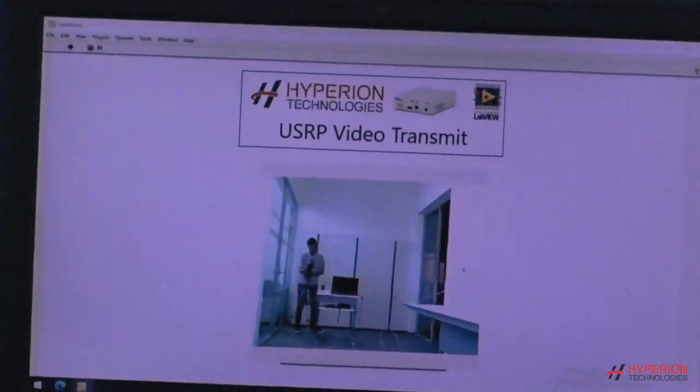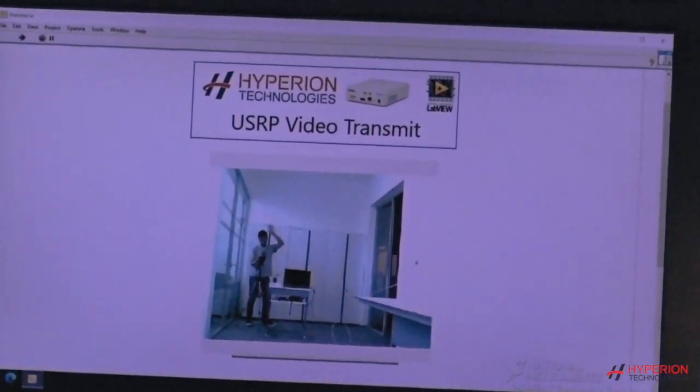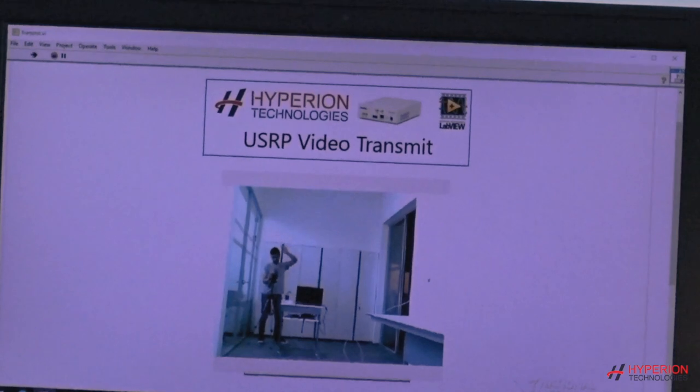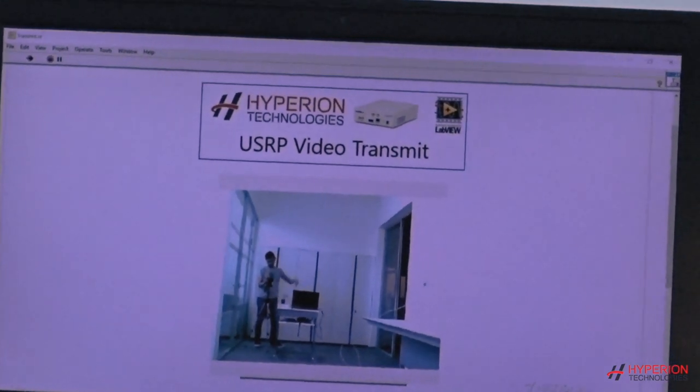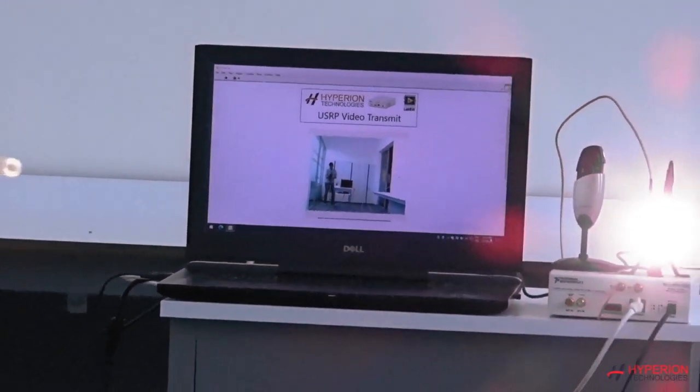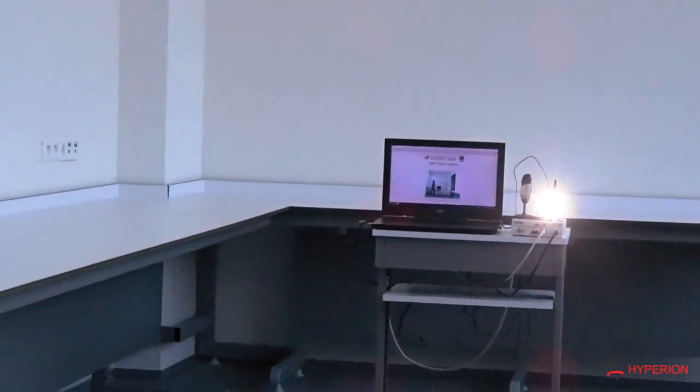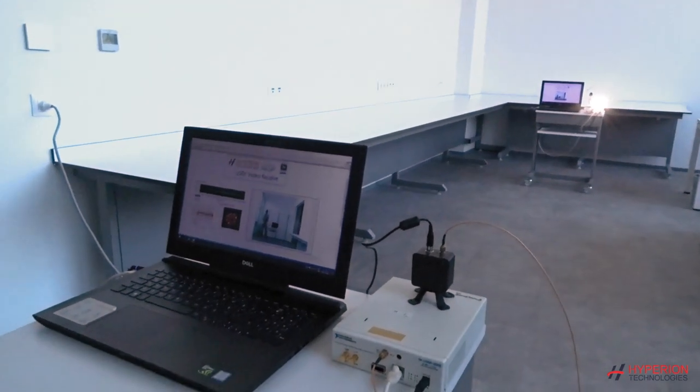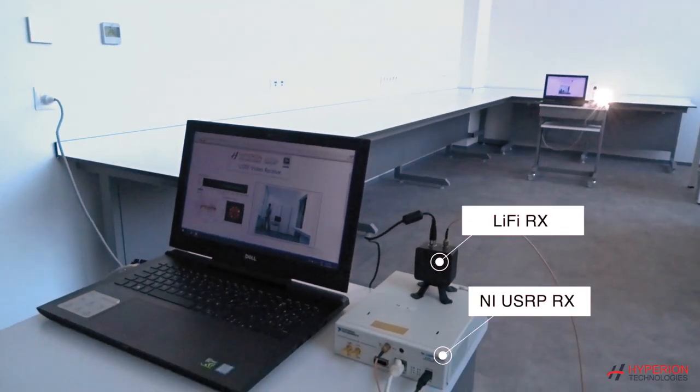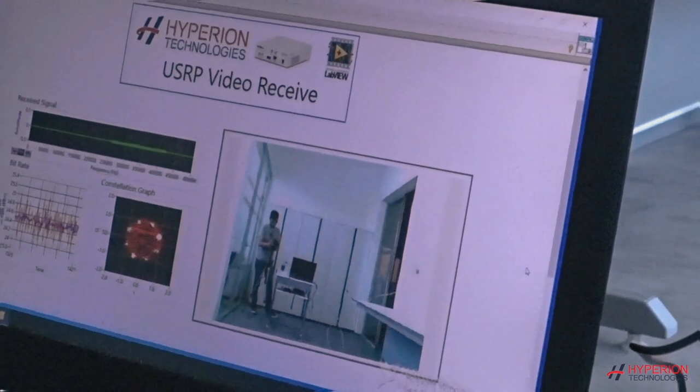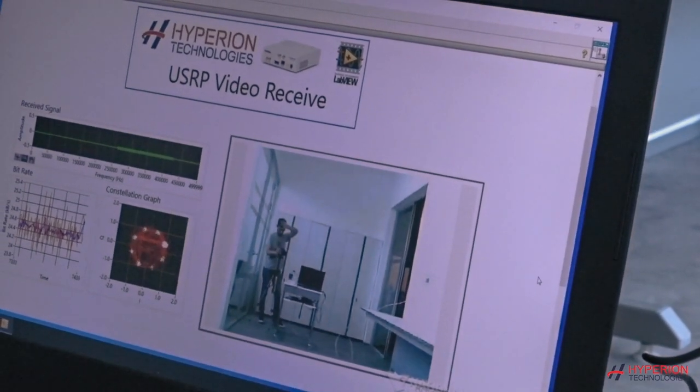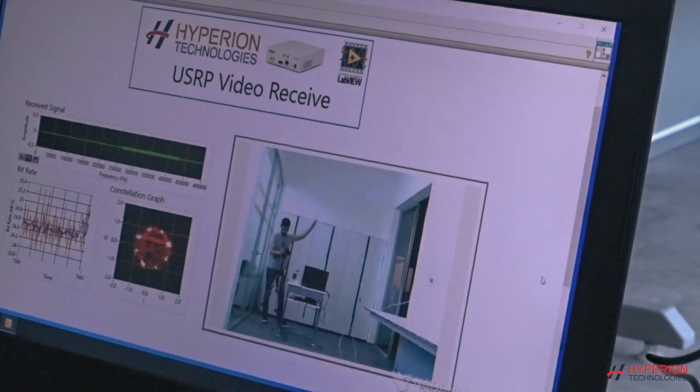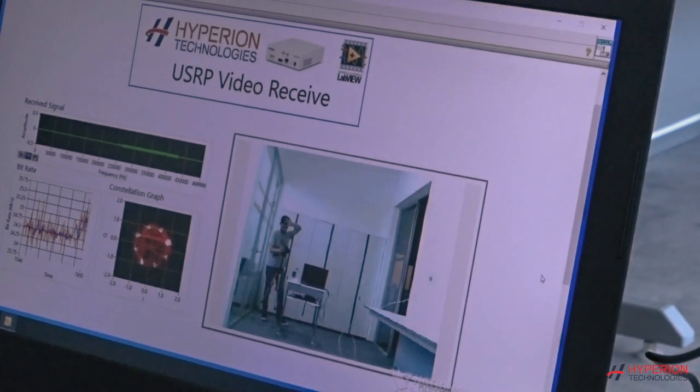In our setup, we use the USRP platforms for baseband signal processing, while our custom-designed front-end modules make possible the transmission and reception of Li-Fi signals. The signal is modulated with 8 PSK. After the addition of a proper DC bias, first we consider a line-of-sight transmission case.